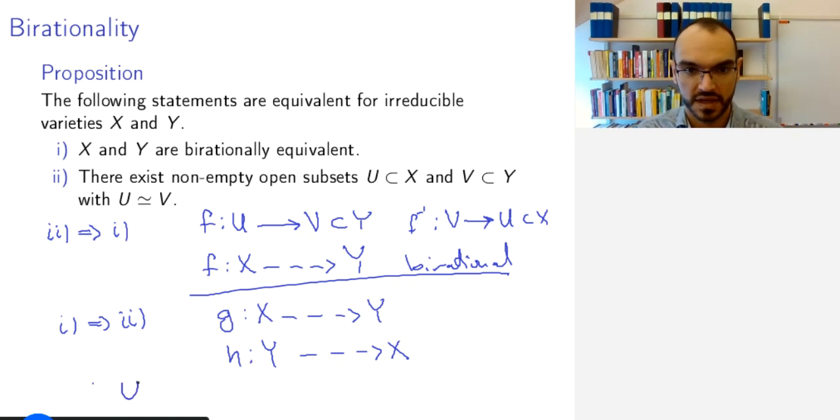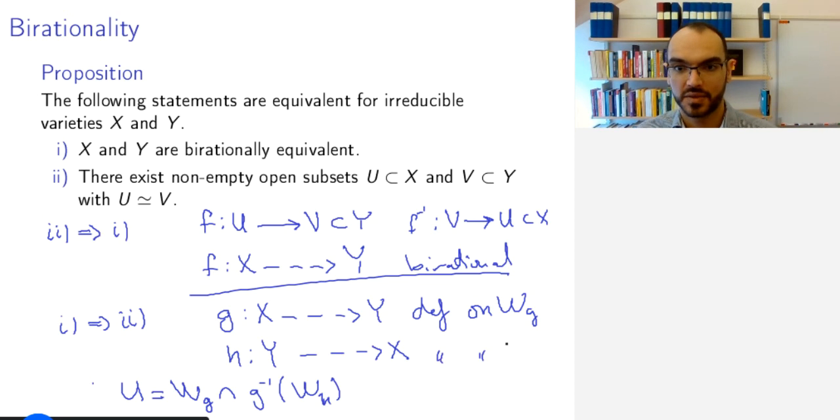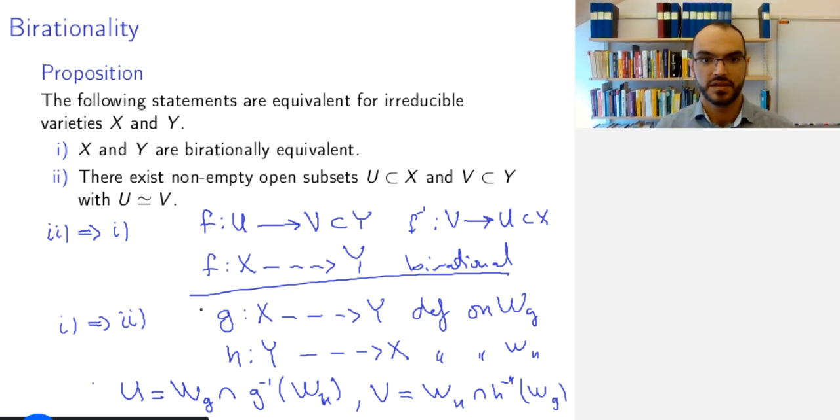So then you take as U, I will say W_g intersect with the pre-image of W_h where W_g is the open set where g is defined and W_h is the set where h is defined and likewise you take as your V, W_h intersect with h inverse of W_g. Then you get from your maps g and h restricting them to these sets an isomorphism from U to V so these two conditions are equivalent.